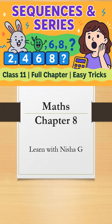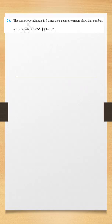We are studying class 11 mathematics chapter 8 sequences and series. This question says the sum of two numbers is 6 times the geometric mean. We have to show that the numbers are in this given ratio.